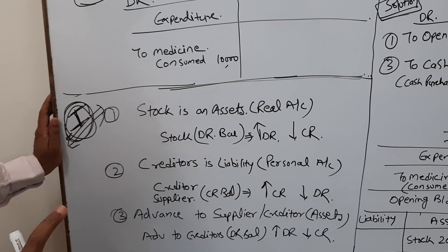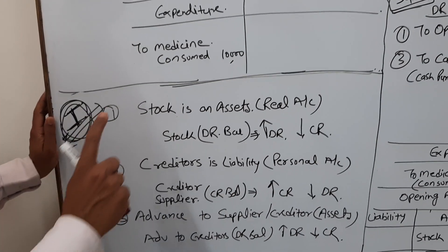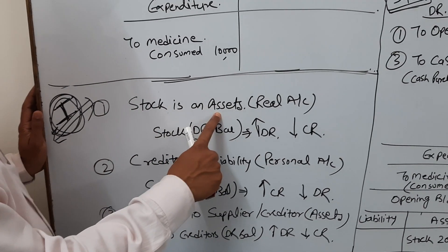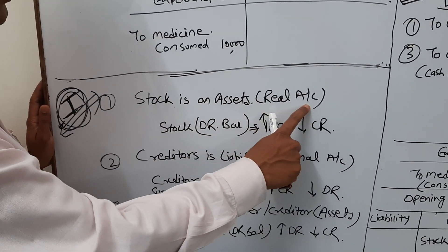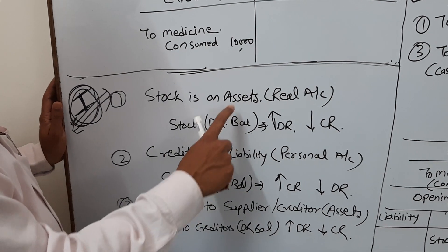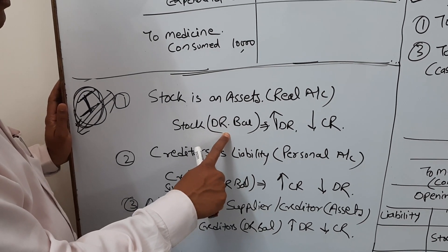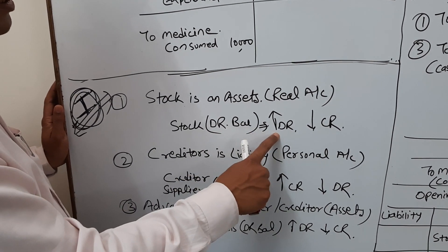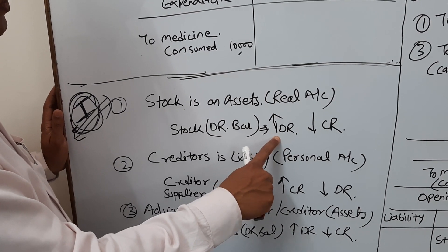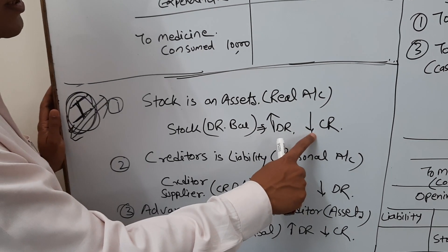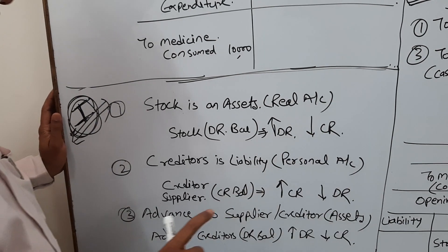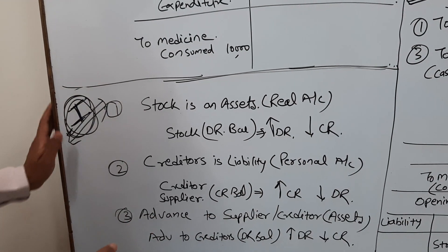Once again: stock is an asset, real account in nature, having debit balance. Increase is recorded by debiting the account; decrease is recorded by crediting the account.